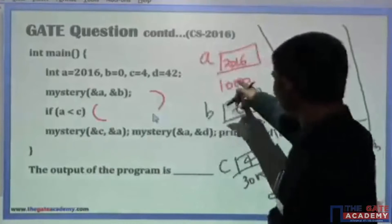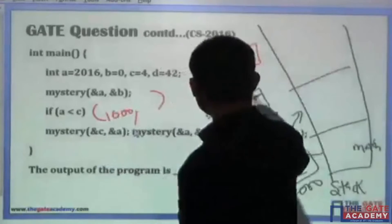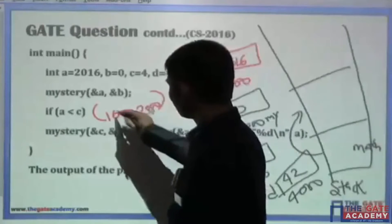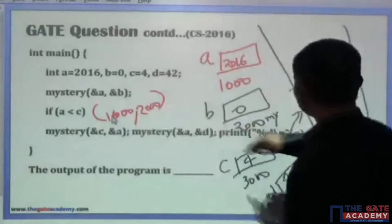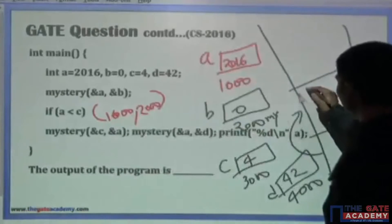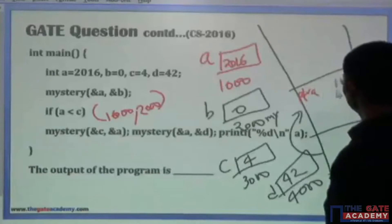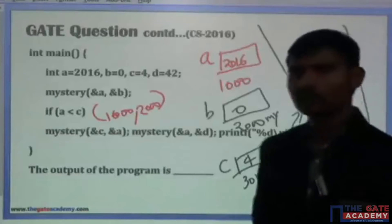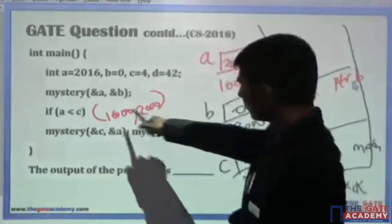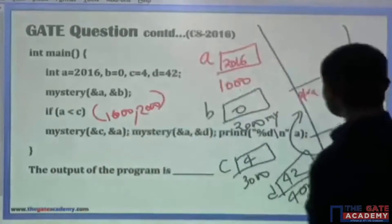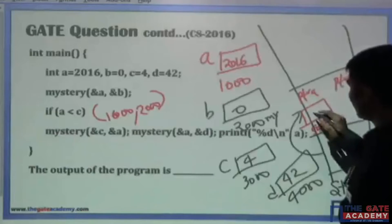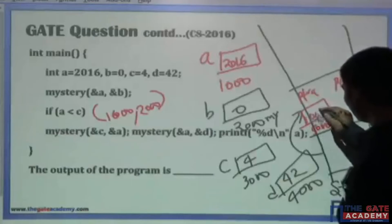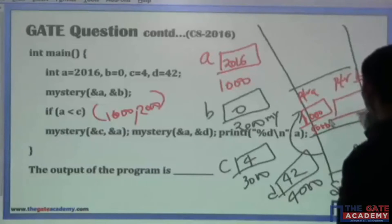The first argument is ampersand a — the address of a, which is 1000 — and the second is the address of b, which is 2000. This is called call by pointer. The control goes to the mystery function. ptrA and ptrB are two local pointers receiving 1000 and 2000 respectively. ptrA is available at address 5000 holding 1000, and ptrB is at address 6000 holding 2000. There is also a temporary pointer temp, available at address 7000, with no initial value.